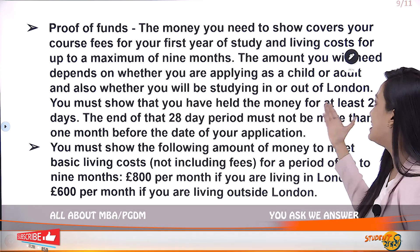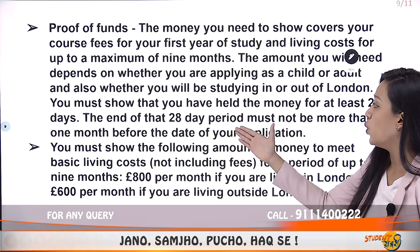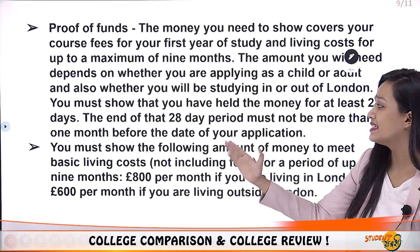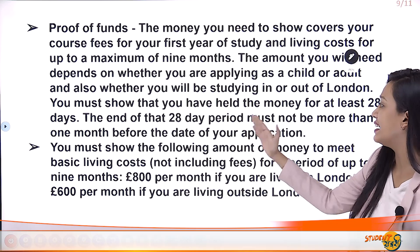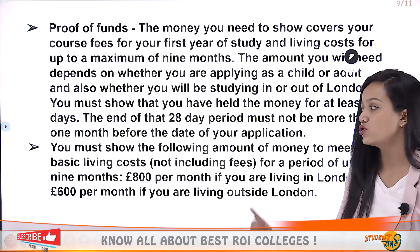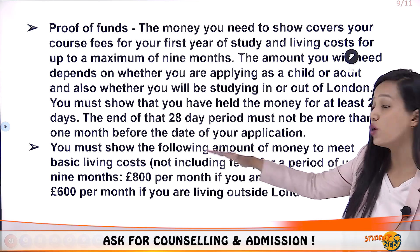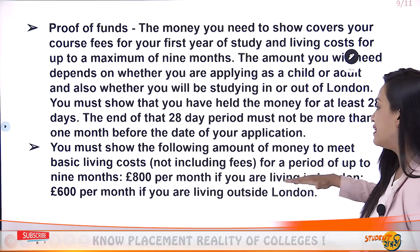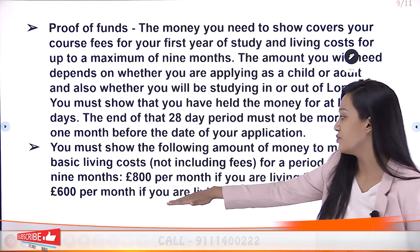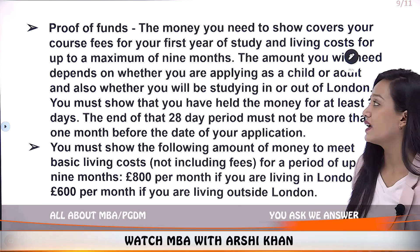The amount you need depends on whether you are applying as a child or an adult, and whether you will be studying in or outside London. You must show that you have held the money for at least 28 days, and the end of that 28-day period must not be more than one month before the date of application. Basic living costs for up to nine months are approximately £800 per month if living in London, or £600 per month if outside London.